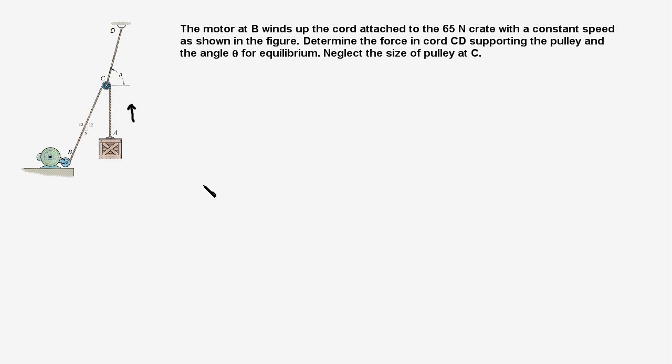The first step is to draw a free body diagram of the pulley, which is in equilibrium. We neglect the size of the pulley so we can treat it as a point, and that point is shown here.